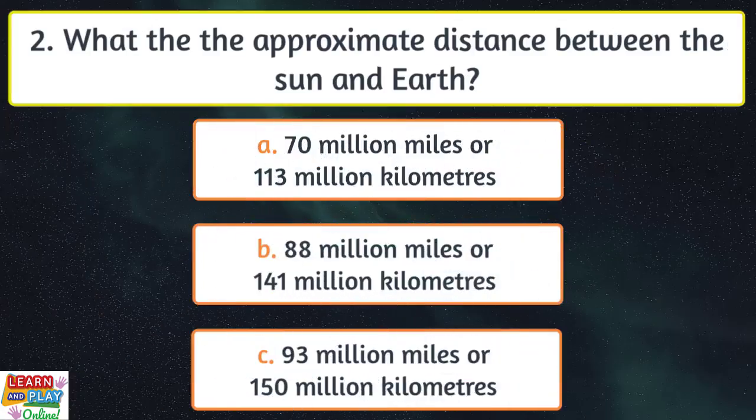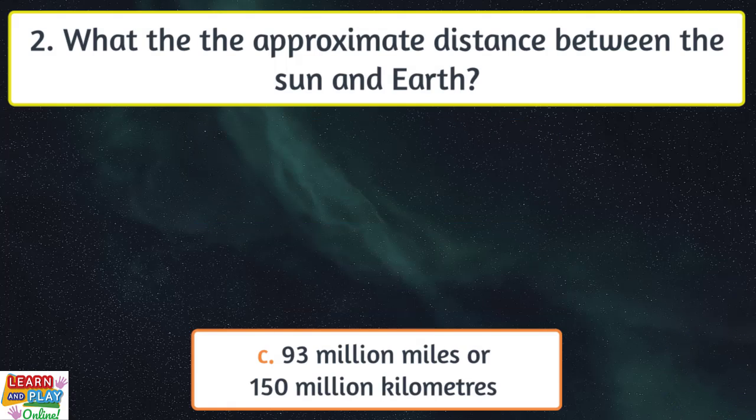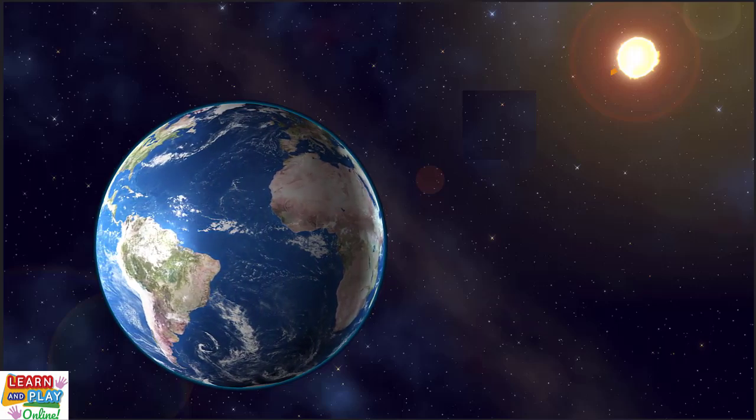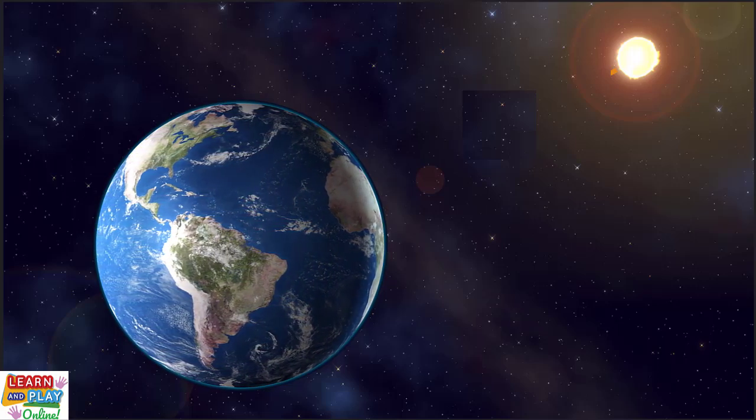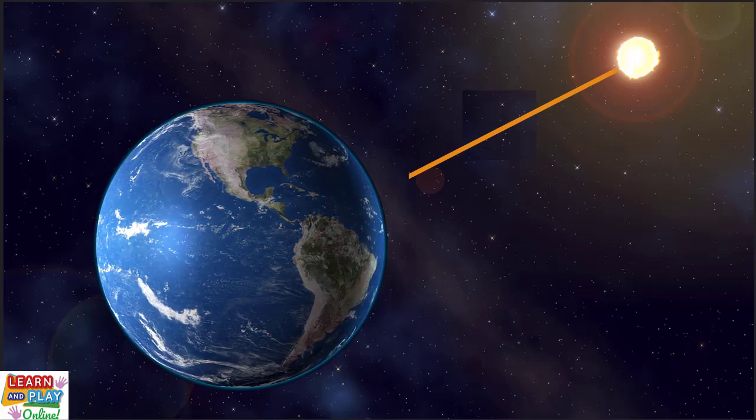Question two. What is the approximate distance between the sun and Earth? 93 million miles or 150 million kilometers. Because the sun is around 93 million miles or 150 million kilometers away from Earth, it takes sunlight just over eight minutes to reach our planet.